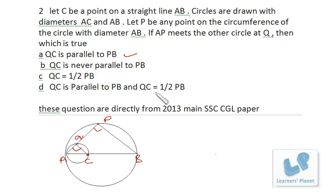If we check out QC is half of PB, that we cannot say because we don't know the location of C. Because C is a point, it's not given that it is exactly at half or exactly at the center. We don't know that, right. So the relationship between QC and PB cannot be set.